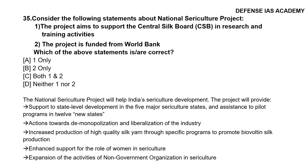Question 35: Consider the following statements about the National Sericulture Project: 1. The project aims to support the Central Silk Board in research and training activities; 2. The project is funded by the World Bank. The correct option is neither 1 nor 2. The National Sericulture Project will help India's sericulture development by providing support to state-level development in 5 major sericulture states, assistance to pilot programs in 12 new states, demonopolization and liberalization of the industry, increased production of high-quality silk yarn, enhanced support for women in sericulture, and expansion of NGO activities.